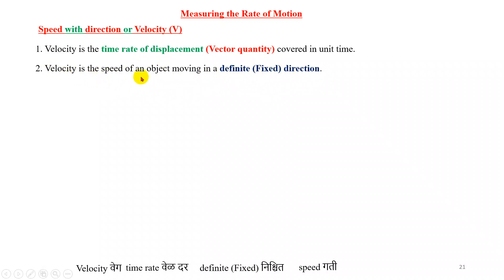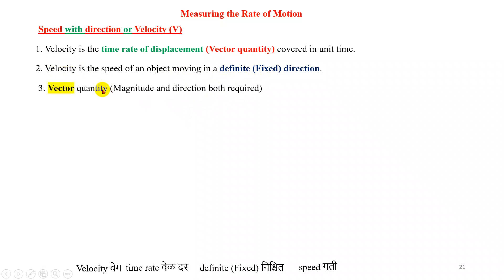Velocity is the speed of an object. Velocity is nothing but speed, but that speed is with a definite direction. Velocity is a kind of speed, but we give it a definite direction. So velocity is a vector quantity — that is, both magnitude and direction are required.